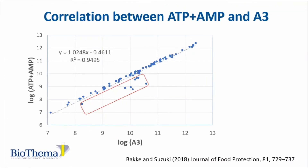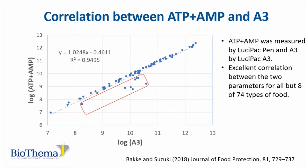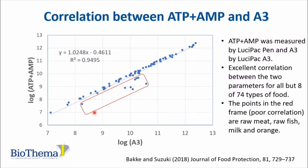The correlation between ATP plus AMP and A3 is shown. For most samples, there is an excellent correlation between the two parameters, but for eight types of food the correlation is not so good. The points in the red frame showing poor correlation are raw meat, raw fish, milk, and orange. But the overall correlation is very good.